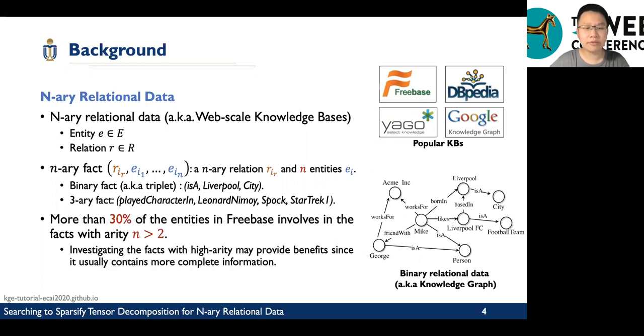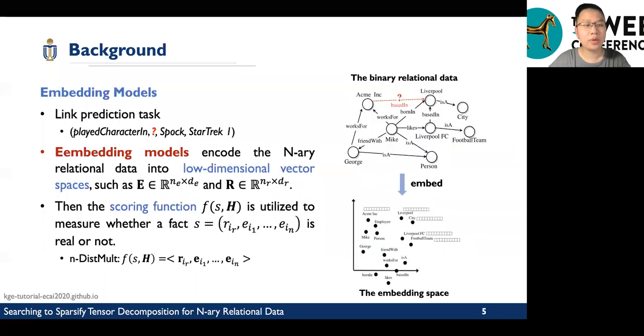Moreover, more than 30% of entities in Freebase are involved in facts with arity larger than 2. Investigating facts with high arities may provide benefits since they usually contain more complicated information. We know that n-ary relational data is highly incomplete. Thus, how to complete it has been a crucial task. One of them is to predict the missing entities, which we call link prediction. Here is a question: Who played Spock in Star Trek 1? We want to predict the missing value or missing entities.